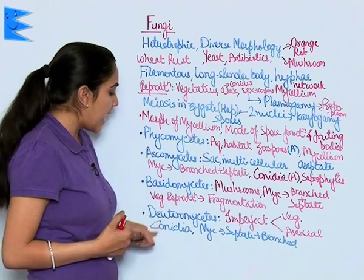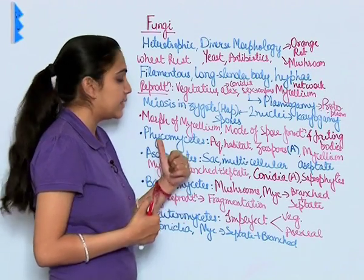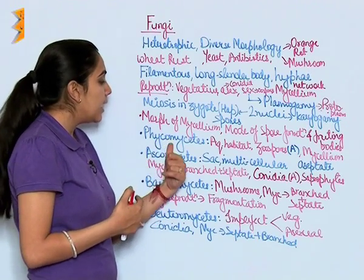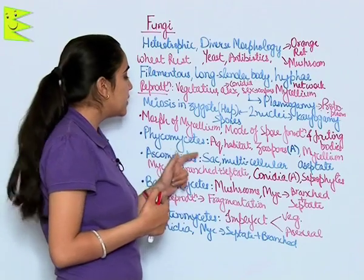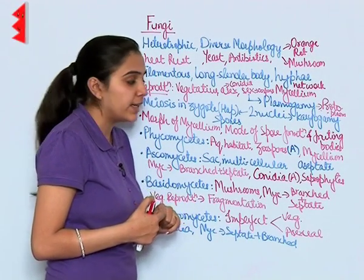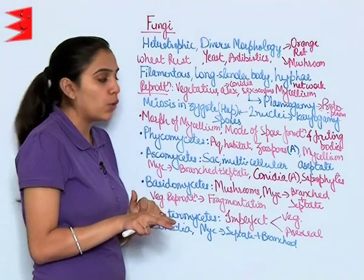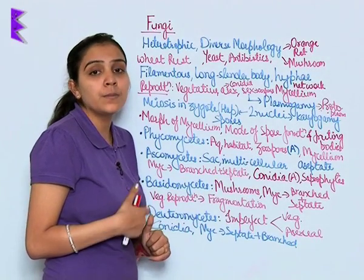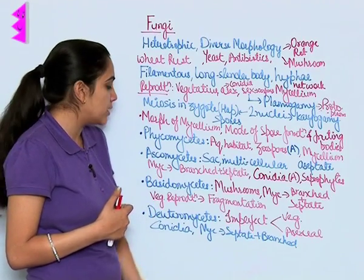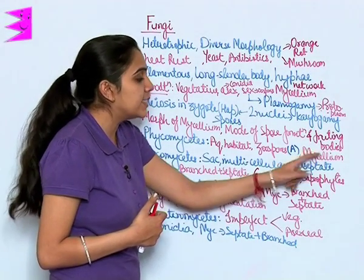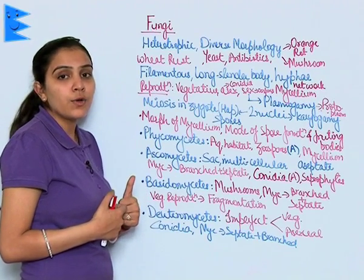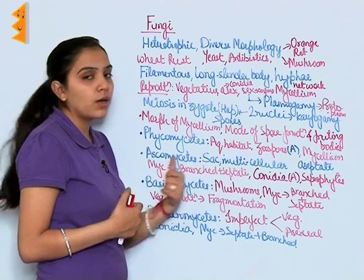Let us understand these one by one. In Phycomycetes, these are found in aquatic habitats, usually free-flowing. They reproduce asexually by the formation of zoospores, and their mycelium is aseptate. Next is Ascomycetes.